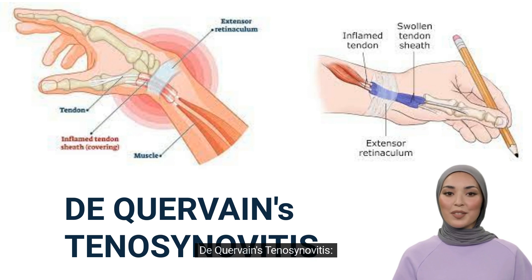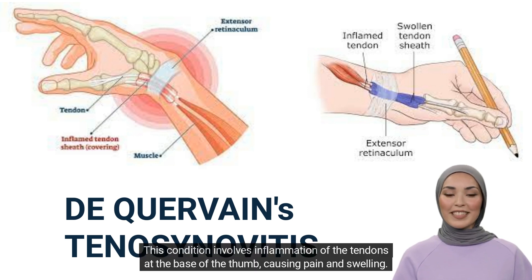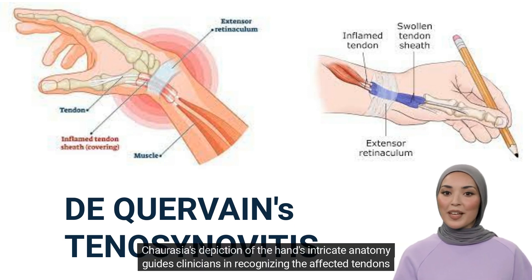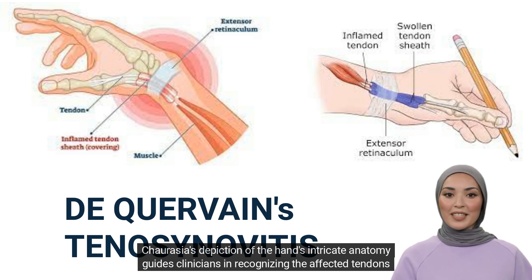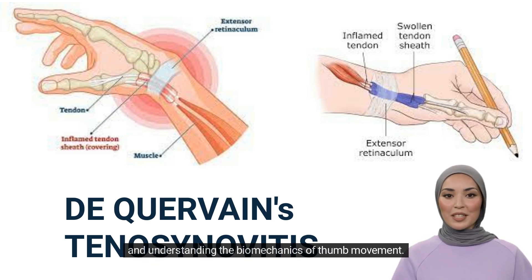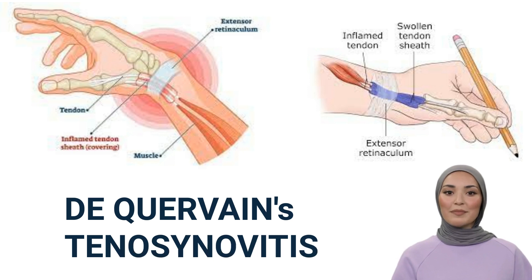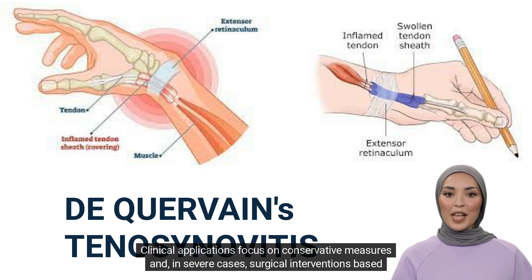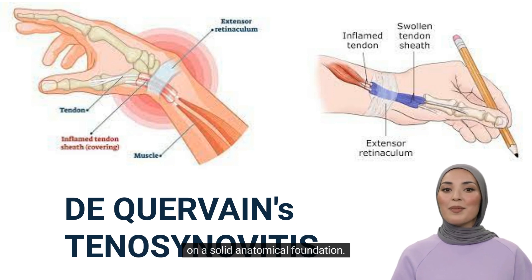De Quervain's Tenosynovitis: This condition involves inflammation of the tendons at the base of the thumb, causing pain and swelling. Chaurasia's depiction of the hand's intricate anatomy guides clinicians in recognizing the affected tendons and understanding the biomechanics of thumb movement. Clinical applications focus on conservative measures and, in severe cases, surgical interventions based on a solid anatomical foundation.